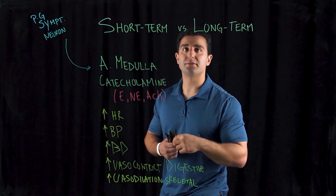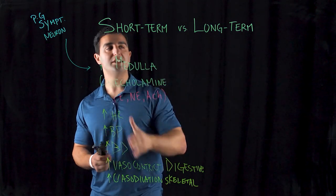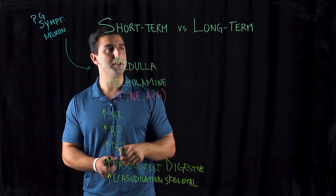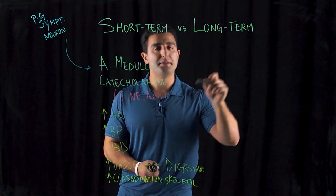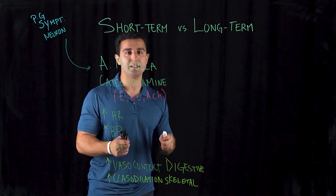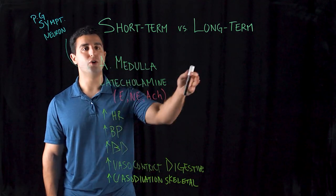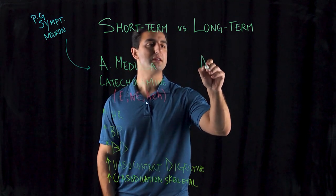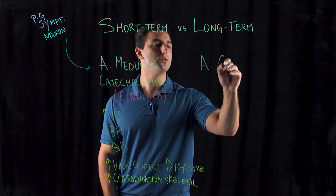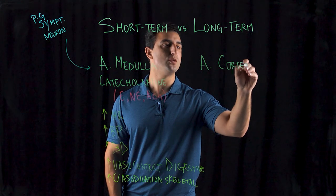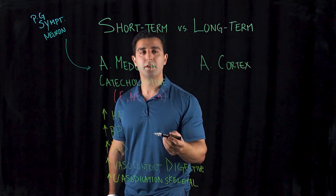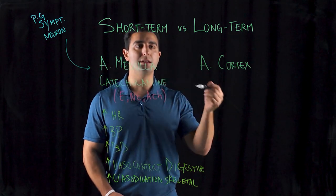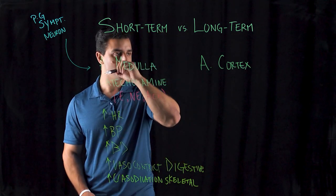Long-term stress is different. When this has been happening consistently, your hypothalamus begins to trigger certain releases of hormones from the adrenal cortex. Long-term or chronic stress involves the adrenal cortex, which produces the mineralocorticoids, the glucocorticoids, and the gonadocorticoids.